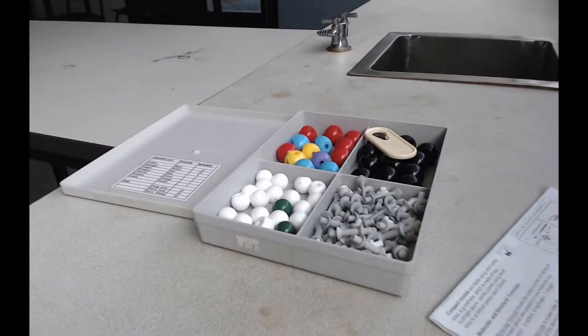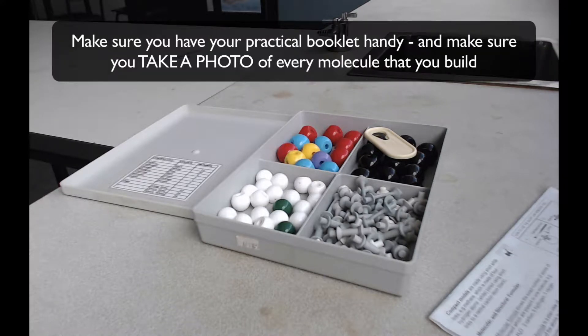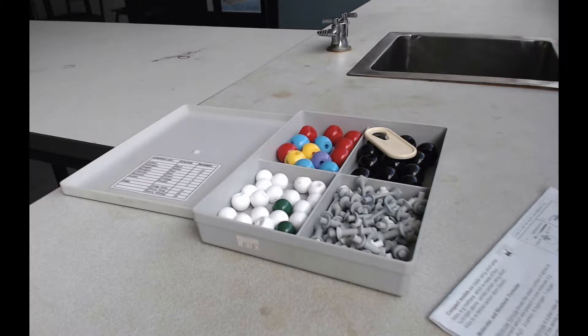So this practical is fairly simple in the sense that you just go through the practical sheet building the molecules that it says there, but to do that you're going to need to make sure that you know what color each element is, so you can find that information out from your practical sheet.